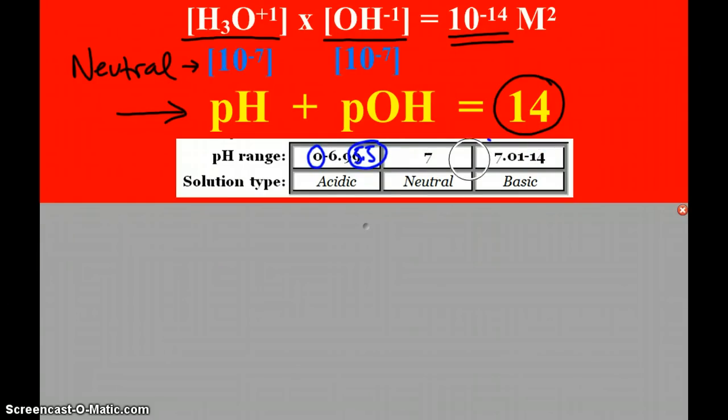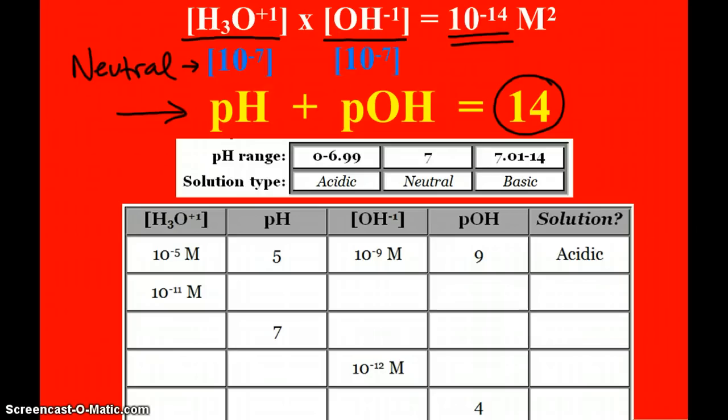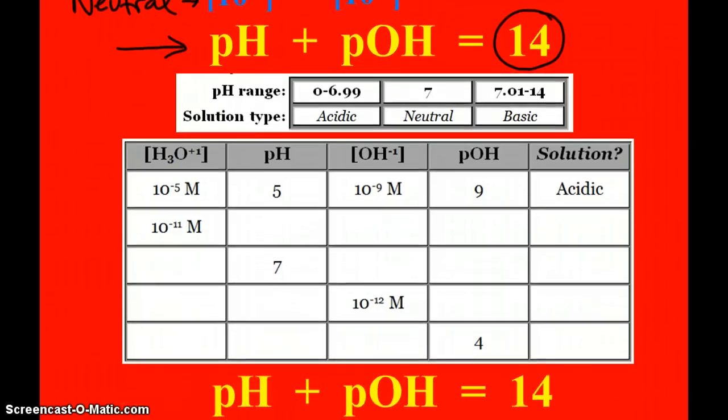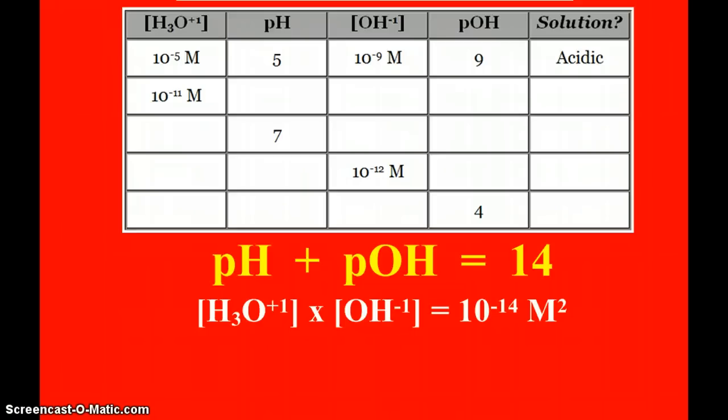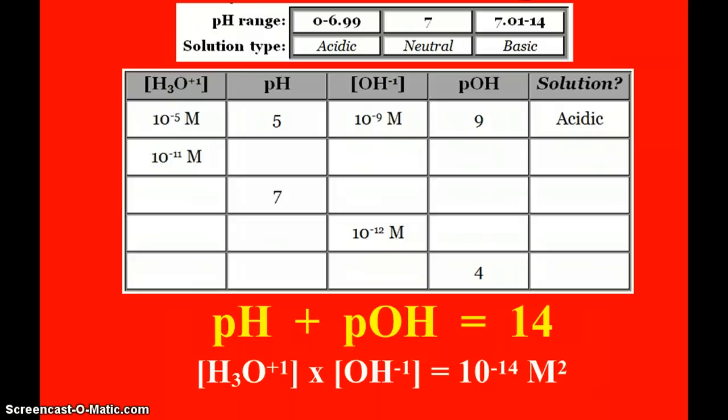But right now, let's just focus on how we calculate them. Well, baby steps, we have this nice little chart that we can work with. And you see that the first row is filled in for us. When I have a concentration of hydronium, that links up with pH. Concentration of hydroxide links up with pOH. And you can kind of see that the exponents and the pH and pOH are working together.